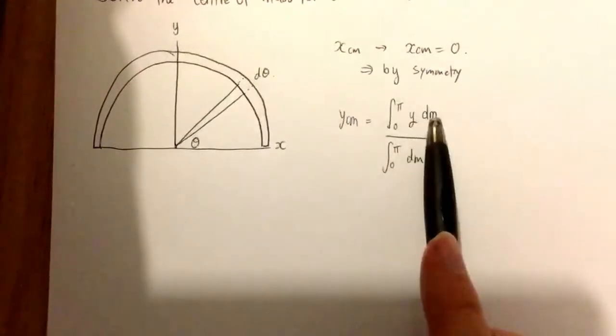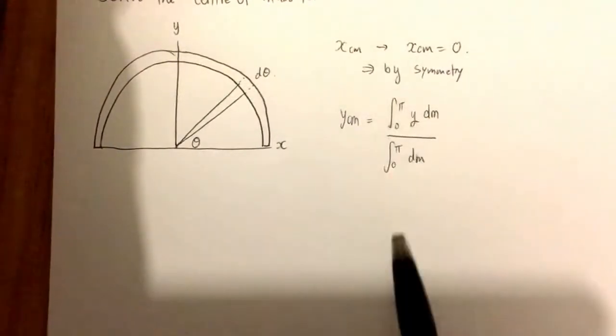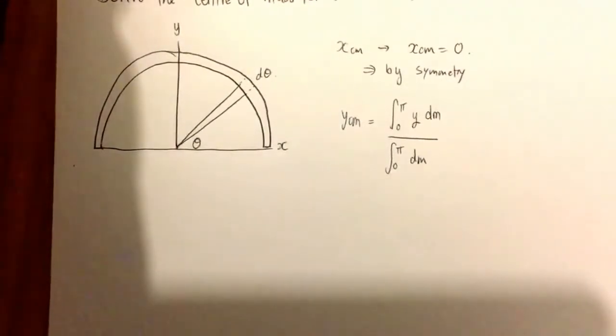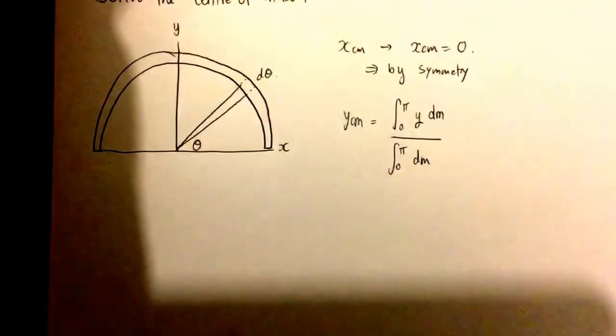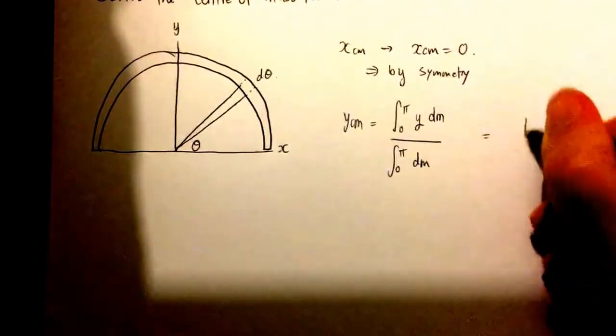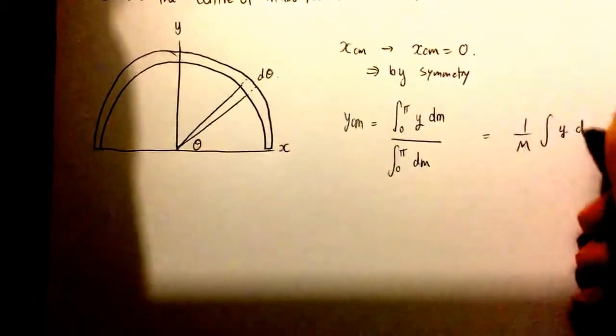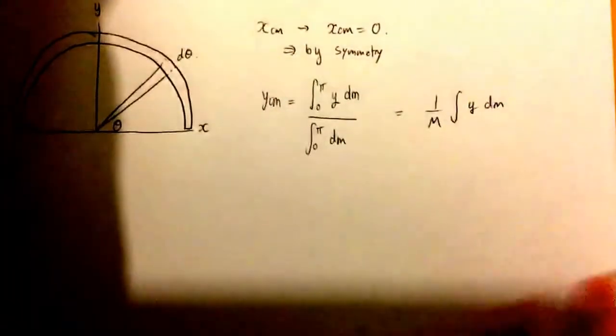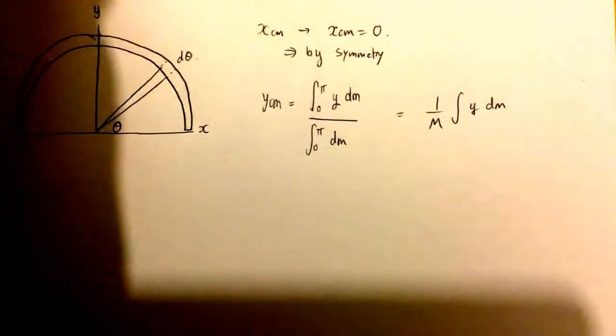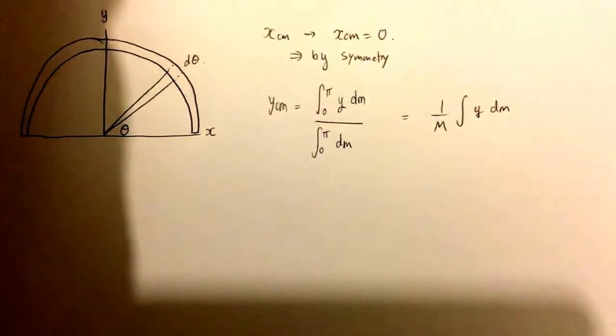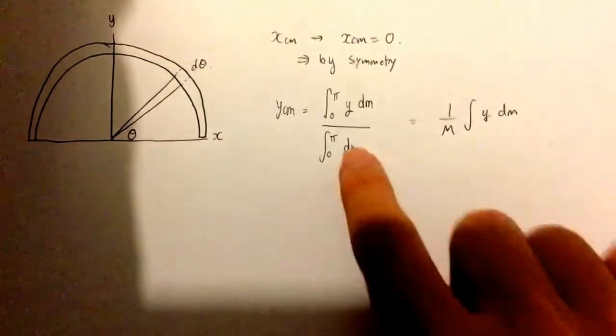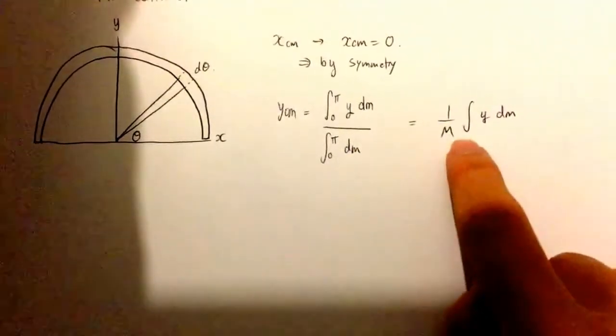The way I like to remember it is it's variable times dm and then integral with the limits and then just in the denominator it's just the integral dm. So sometimes you may see it written as say 1 over m integral of you might see x dm or something like that, but I've just got y here because obviously working with the y coordinate. That's the same thing because if we just integrate all the differential masses we're going to get the total mass anyway.